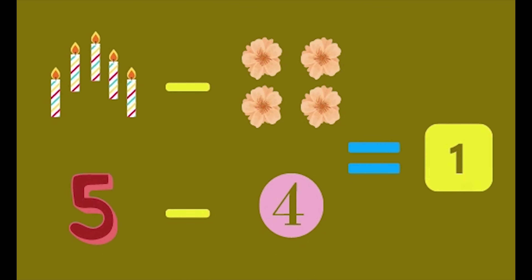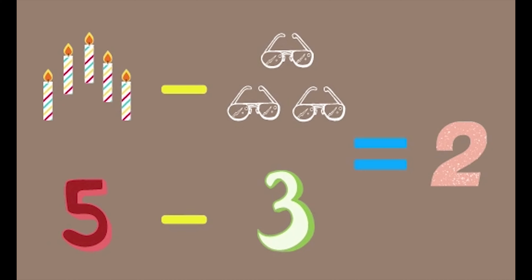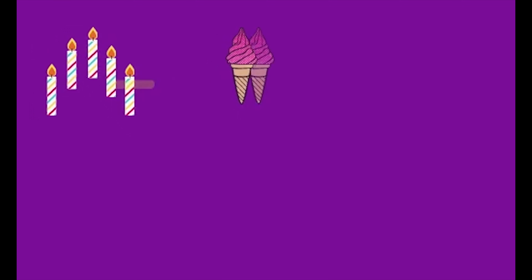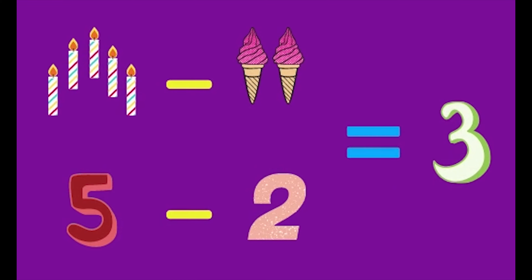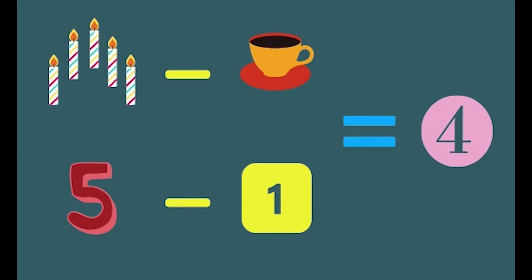So after addition, we are going to learn about... what is it, Shaika? Subtraction. Okay, so can you give me some challenges? Yes, I can. So the first one is 5 minus 4 equals 1. Then 5 minus 3 equals 2. 5 minus 2 equals 3. And the last one, 5 minus 1 equals 4.